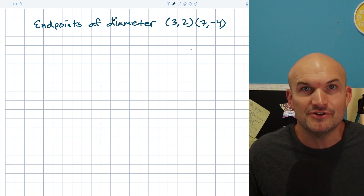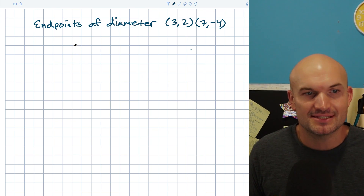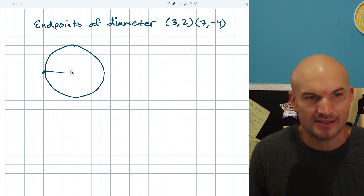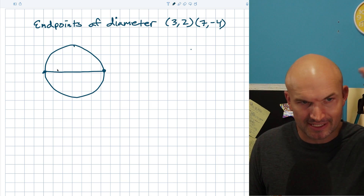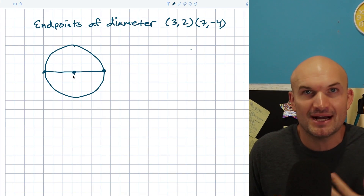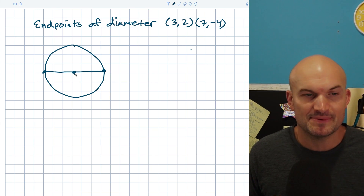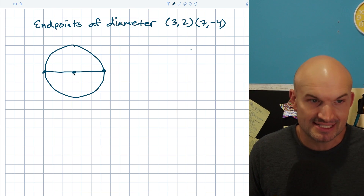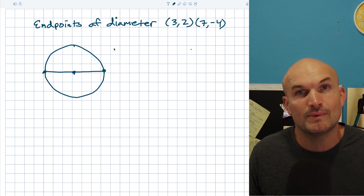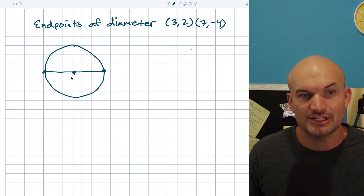In this example, we have no center and no radius — only two coordinate points that are the endpoints of a diameter. This often confuses students. I recommend drawing a circle: the diameter goes across and through the center. So if we know both endpoints of the diameter, the center is just the midpoint of those two points. We can then find r² by plugging in the center and one of the points.